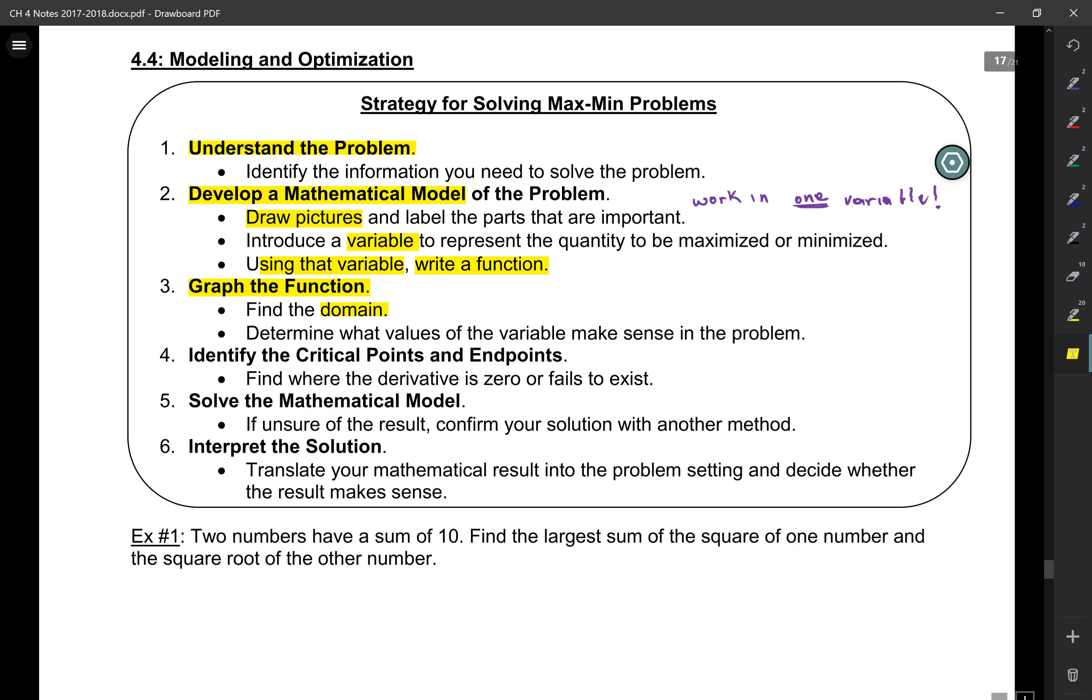Then we graph the function to figure out the domain. And this is important because all of a sudden now, it's not just some random mathematical equation. It's an equation that relates to a particular problem. And if you're working with a sheet of metal from which you need to create a box, then your domain, like if you're talking about the length of the box, it can't be a negative number. It can't be bigger than the amount of material you have. So, you have to determine what values of the variable make sense to that problem.